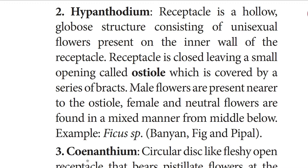The next special type is hypanthodium — the best example is fig fruit. The receptacle is hollow and globose inside, consisting only of unisexual flowers present on the inner wall. The receptacle is closed, leaving a small opening at the top called the ostiole, which is covered by a series of bracts. The male flowers are present near the ostiole, and the female and neutral flowers are found mixed from the middle downward.